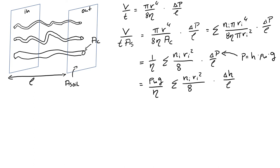Now there is one more thing to do: we have not yet accounted for the tortuosity of these pathways — we only inserted L as the straight-line distance. So we add the tortuosity into the summation, because each capillary can have a different tortuosity, and we account for it this way.